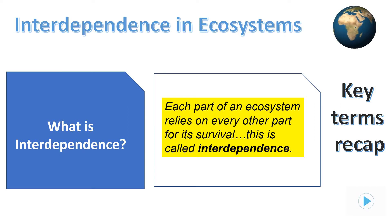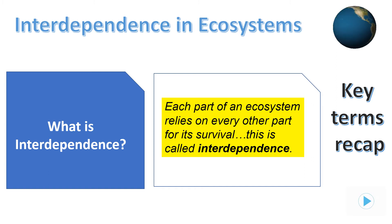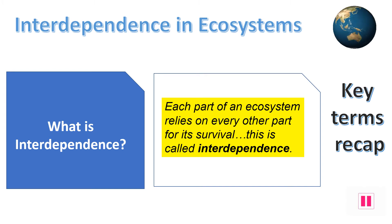Put simply, consumers depend very much upon producers for a source of food, and some depend on them for their habitat. The important thing is that all parts are interlinked, so if one part changes it affects all the other parts that depend upon it.